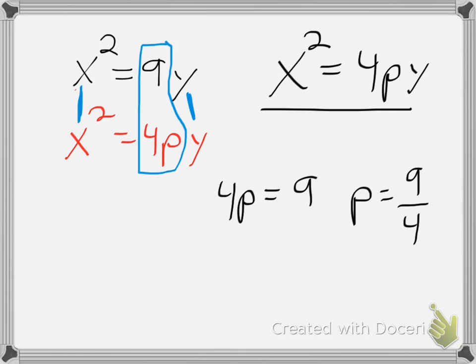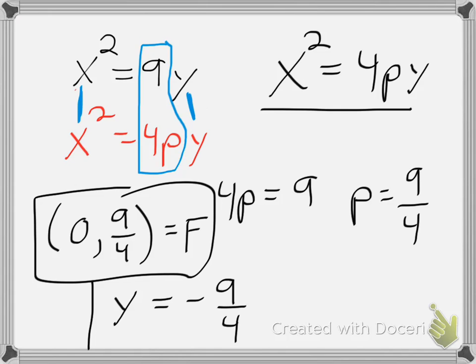So, now that we have our p-value, we can determine our focus, which is going to be 0, 9 fourths. And from that, since with this setup, we can assume that the vertex is at the origin, we can then assume the directrix is the equation y equals negative 9 fourths. So, with this example, it's a matter of lining up the general equation with its counterparts, giving us the focus and the directrix.